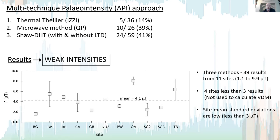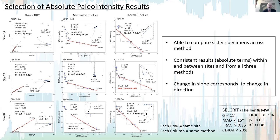In our calculation of virtual dipole moments, we also note a low site mean standard deviation in absolute terms of less than 3 microteslas. Looking at the Arai plots, each column represents a different method and each row represents the same site, so we can compare sister specimens across methods. We get consistent results in absolute terms within and between sites and across all three methods — for example, site BP gives 5.3, 6.7, and 7.4 microteslas from three different methods. Some two-slope Arai plots are present, where a change in slope usually corresponds to a change in direction.